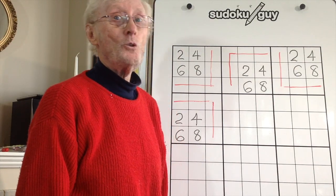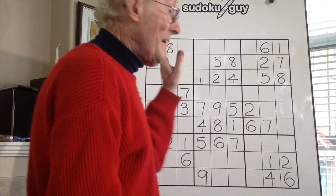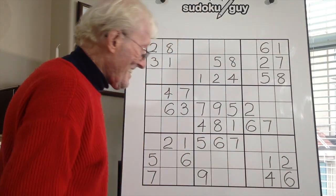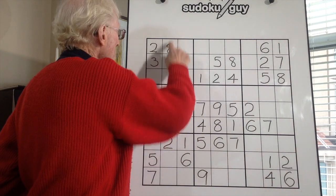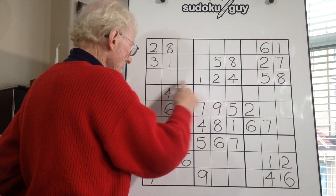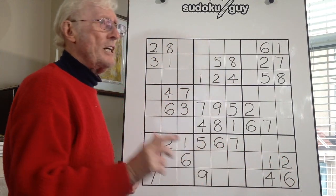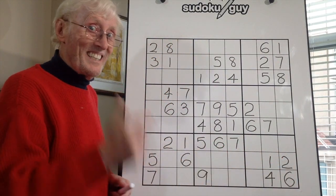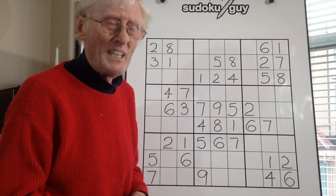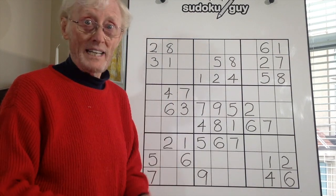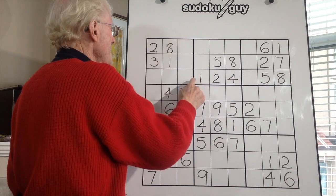Here we are with a real puzzle where I want to show you the technique called a pattern of a square inside a block. There's one there, there's one there, and there's one down in here. I've designed this just to explain and show you how this technique works. You could probably solve this puzzle without using this technique, but it's fun knowing an extra technique — you never know when you might need it. Let's first take this block here.